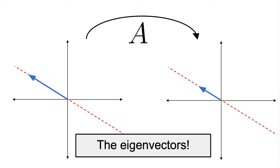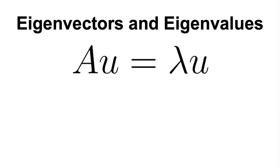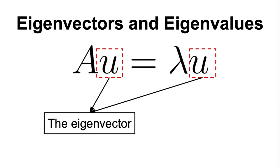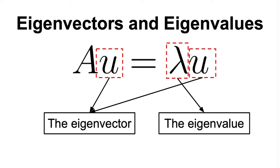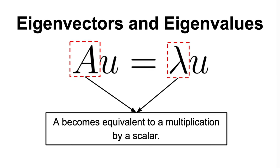To put this into more mathematical terms, we have that our matrix A multiplied by the eigenvector u is equal to u multiplied by a scalar value lambda, which is the eigenvalue corresponding to that eigenvector, and which tells us how much we have to stretch the eigenvector to land in the same spot as if we multiply the same vector by A. In a nutshell, for those special vectors, A becomes equivalent to a multiplication by a scalar, which is a wonderful result in linear algebra.